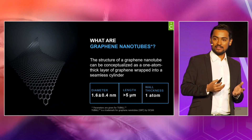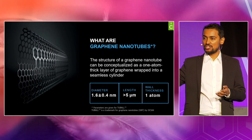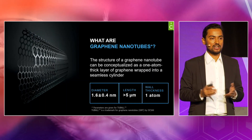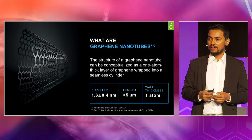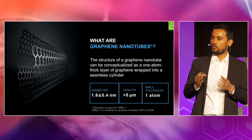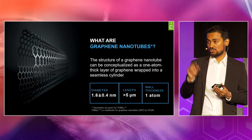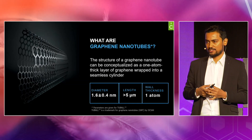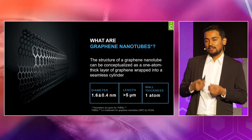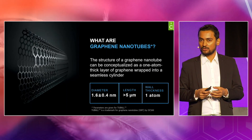But what is a graphene nanotube? I'm pretty sure most of you already know graphene, which is a one-atom-thick sheet of carbon. If it is rolled into a seamless tube, it's called a single-walled carbon nanotube, or a graphene nanotube. In the case of Tuball, the diameter of this tube is about 1.4 nanometers. The length is 5 microns and higher — very, very thin and very, very long.